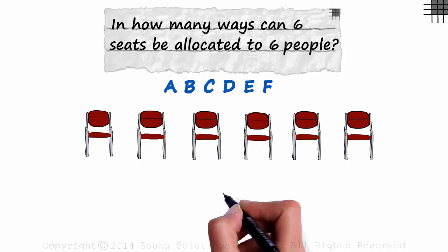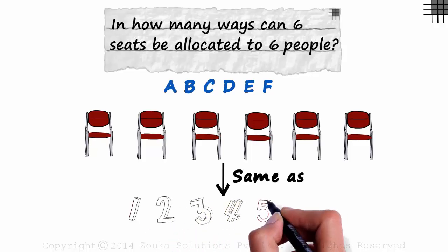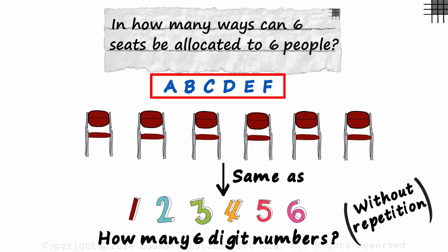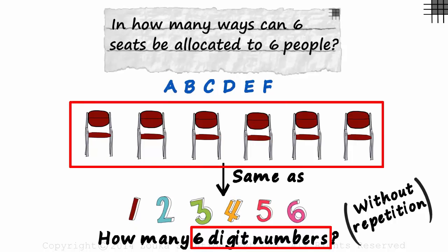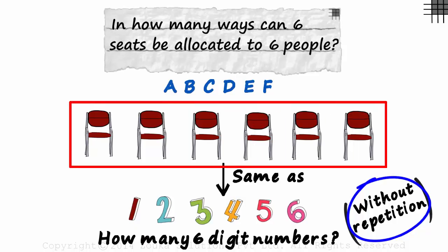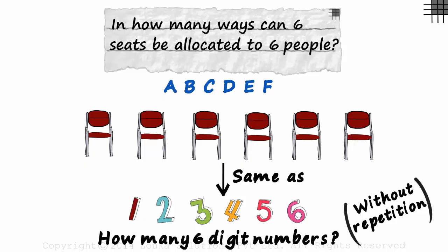Think logically. Isn't this the same as having six different digits and being asked how many six digit numbers can be formed? Of course, without repetition. Six different people are analogous to six different digits. Each number formed will be analogous to each arrangement formed. And it is obviously without repetition as one person cannot be seated on two or more seats. If one person is seated on chair one, he cannot be seated on chair two as well, right? And what will the answer be? Let's go back to the previous page.